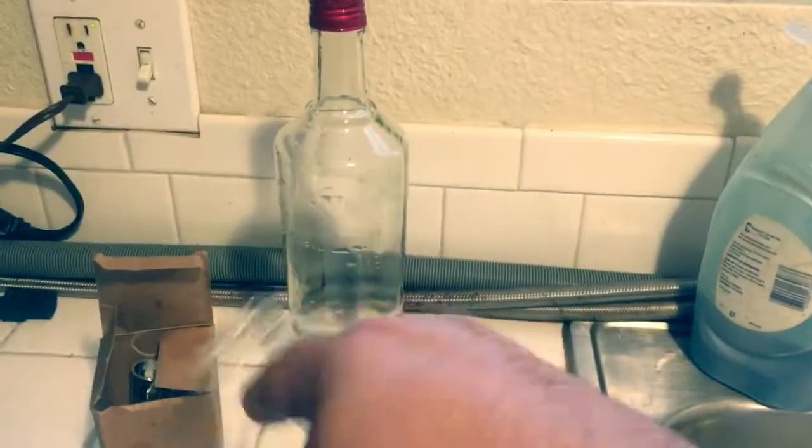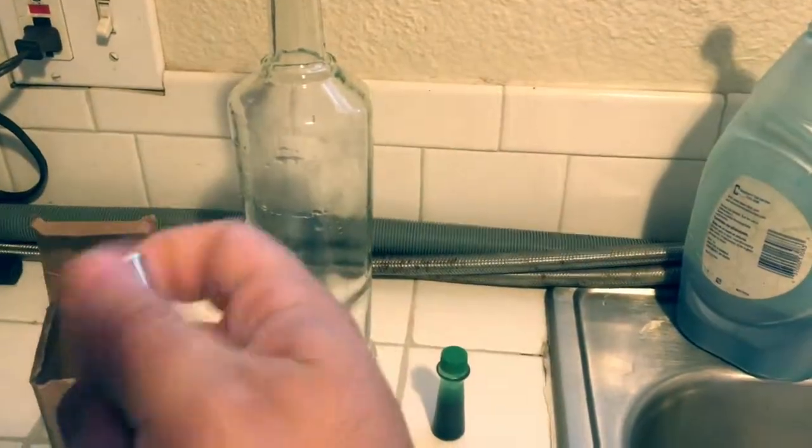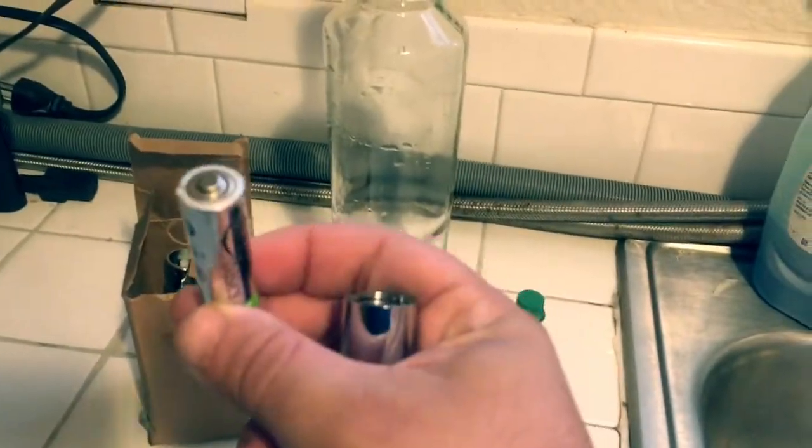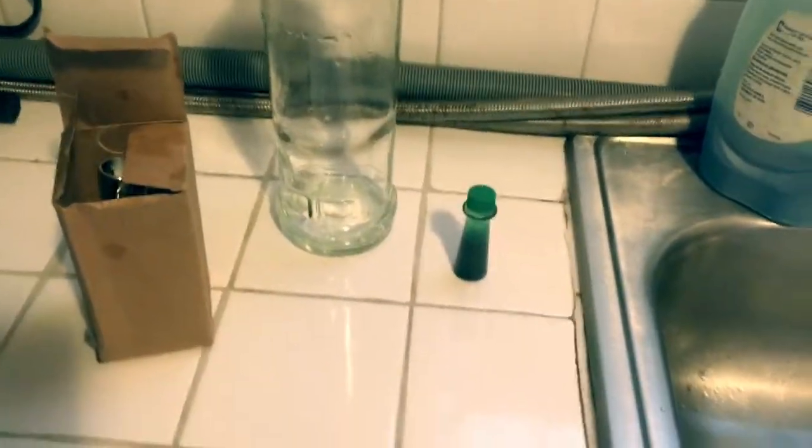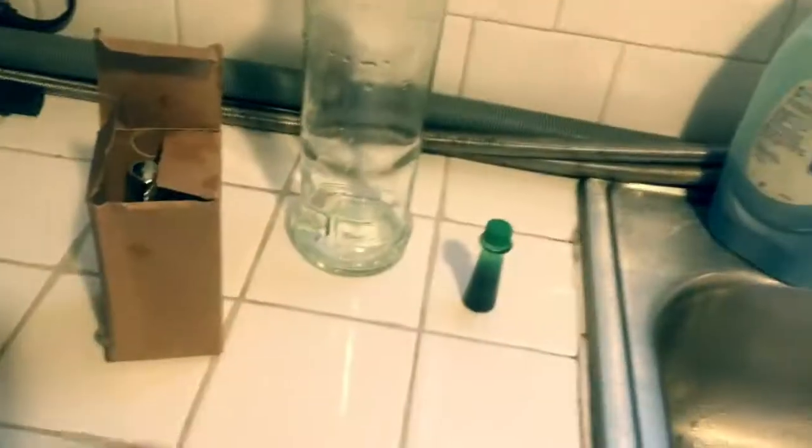You simply screw off the top, place the battery in positive side down, and it's one double A, and then put the top on.